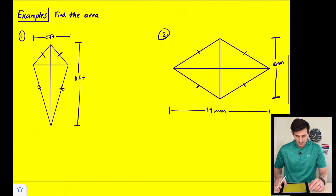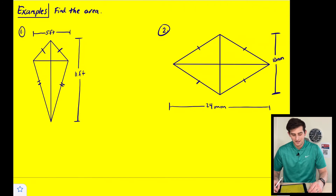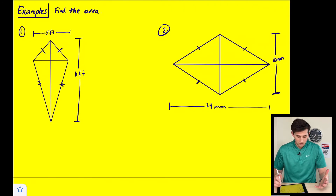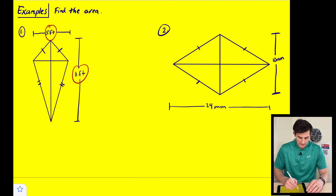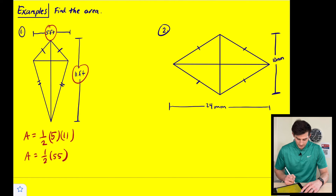Let's look at a couple of examples. For number one we're going to find the area of this kite. Diagonal number one is 5 feet and diagonal number two is 11 feet. So the area is equal to one half times 5 times 11. That gives us half of 55, so the area is 27.5 square feet.